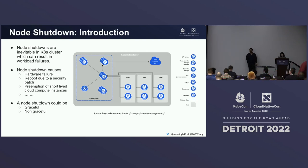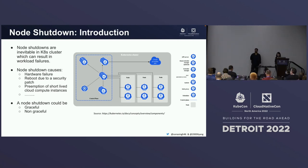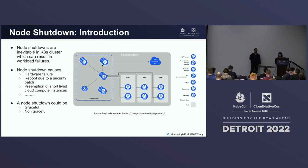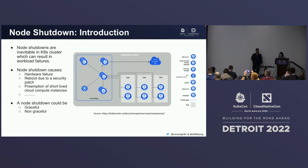In a Kubernetes cluster, it is possible for a node to shut down. This could happen either in a planned way, or it could happen unexpectedly. A node shutdown could happen for many reasons: you need to apply a security patch, do a kernel upgrade, reboot a node, or it could be due to preemption of VM instances, hardware failure, or some software problem.